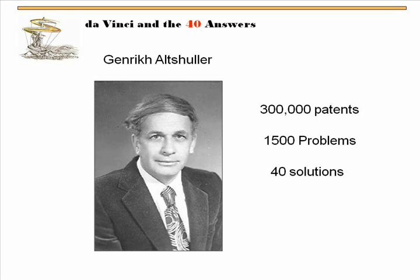This is Henrik Altshuler, a Russian scientist in the 1950s. He went to the library looking for books on how to invent and innovate, and couldn't find any. As he grew up, he wrote letters to Stalin saying we're doing it all wrong and need a systematic way to do this. He bugged Stalin long enough that Stalin finally invited him to give a presentation — and then threw him in jail. When he got out, he received a grant from the Russian Navy to study innovation and creativity.